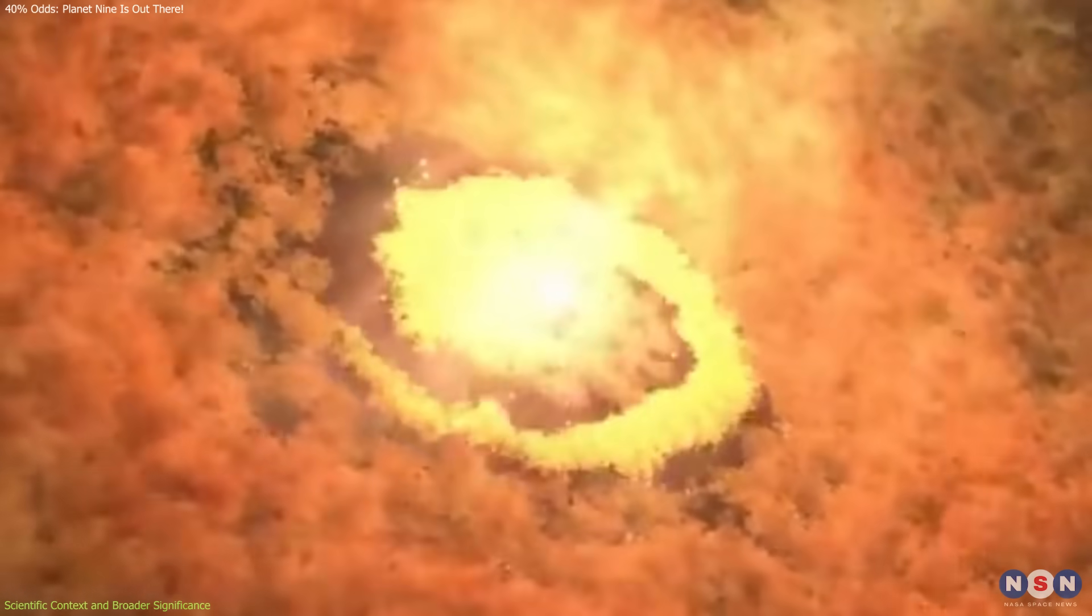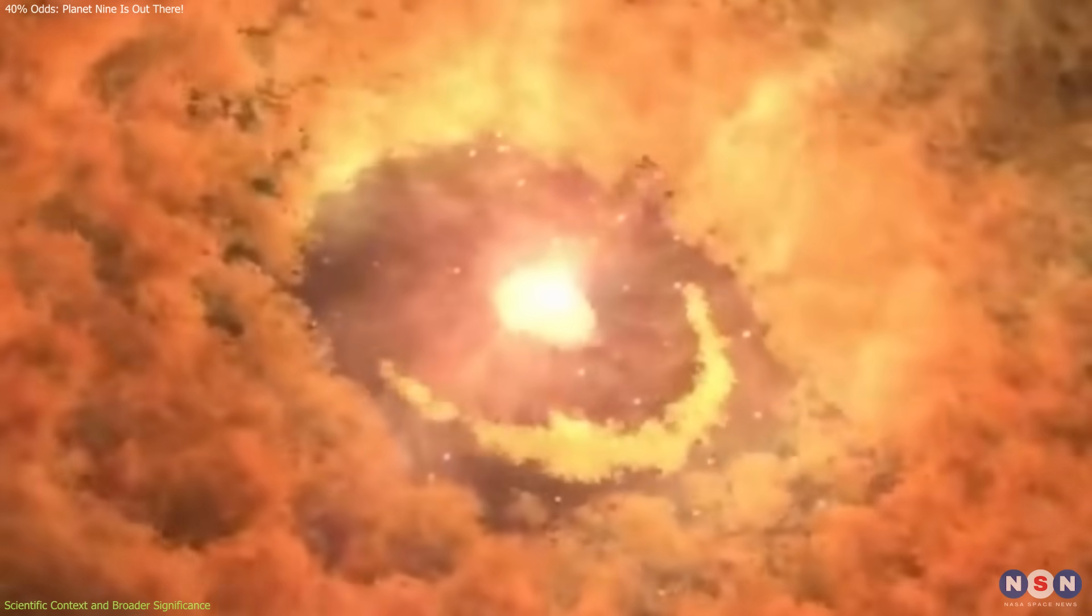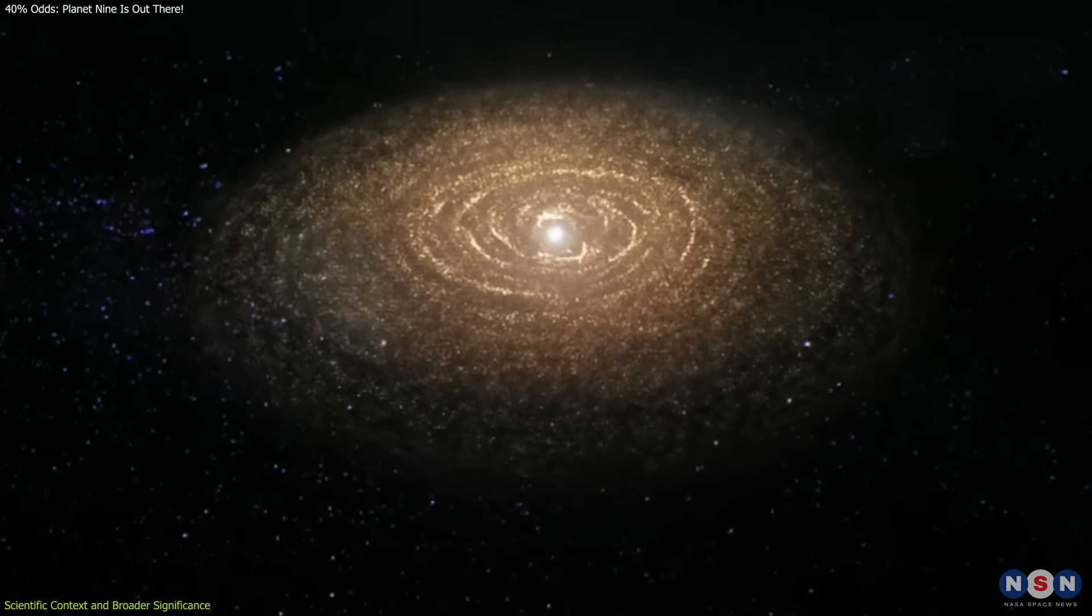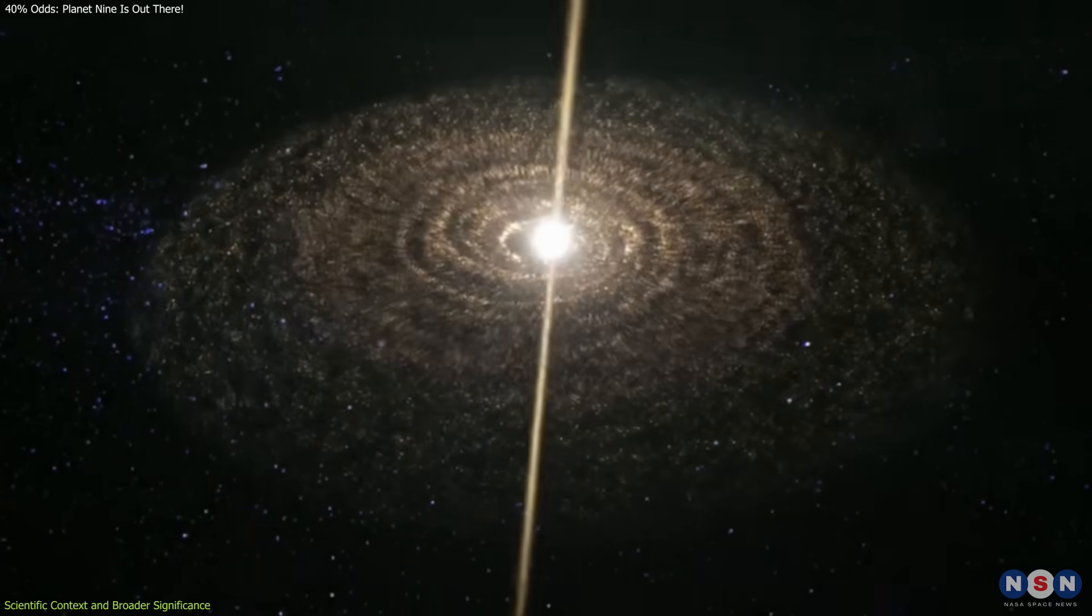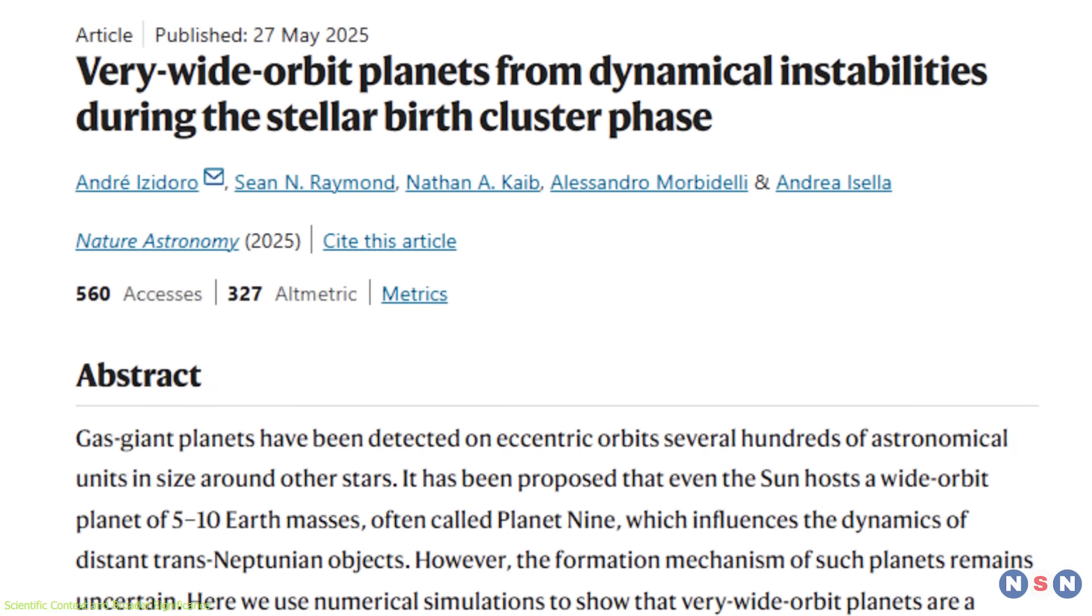Forming planets beyond that range has always been difficult to explain with in-place formation models. By introducing a two-step process, gravitational scattering and stabilization through stellar flybys, this research provides a viable alternative.